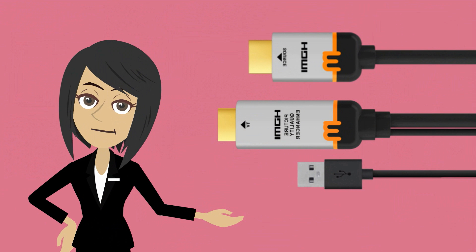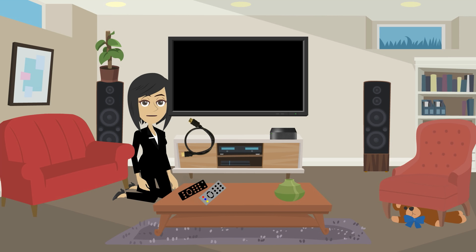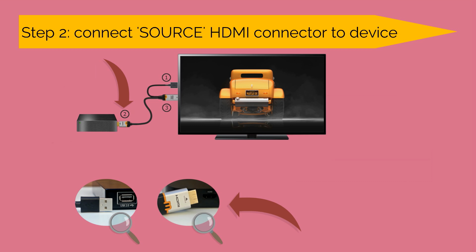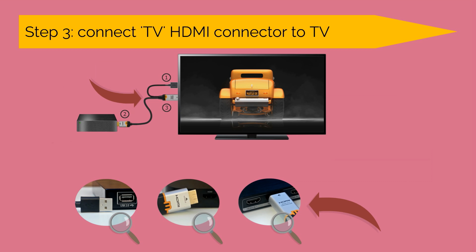Now let's connect your M-Cable. First, unplug and remove your existing HDMI cable. Next, connect M-Cable's USB to your TV's USB port — you can use an external AC-to-USB adapter like a smartphone charger if your TV has no available USB port. Next, connect the shorter M-Cable HDMI connector to your media streamer's HDMI output. Last, connect the longer M-Cable HDMI connector to the same TV HDMI input port that your device was previously connected to.